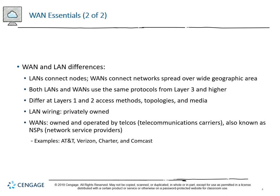LANs and WANs have several differences in terms of distances. LANs connect nodes, individual hosts and intermediary devices. WANs connect groups of those devices through default gateway-based routers and other types of host interconnections over a wider geographic area. LANs tend to be campuses, something like Cape Fear or UNCW.